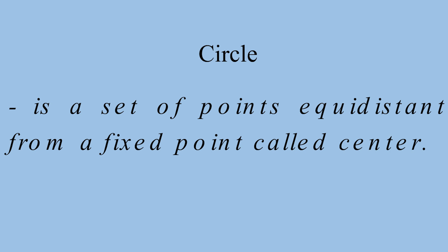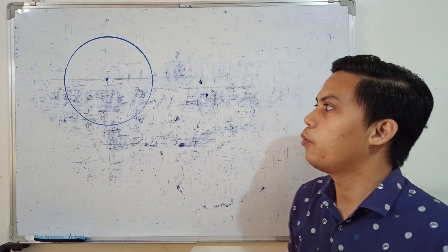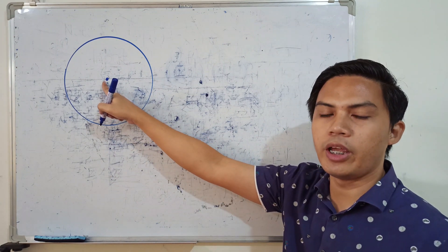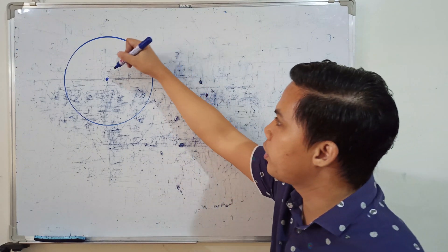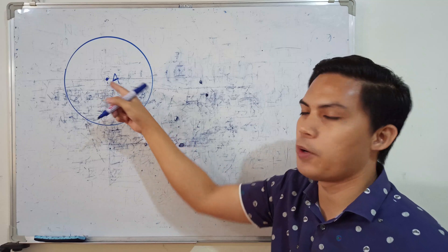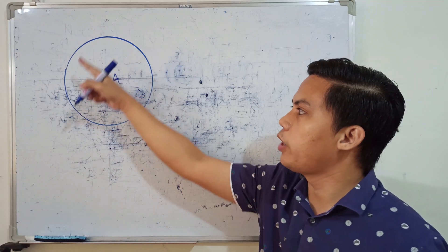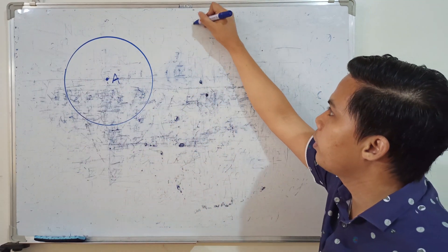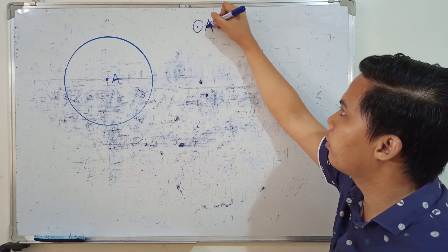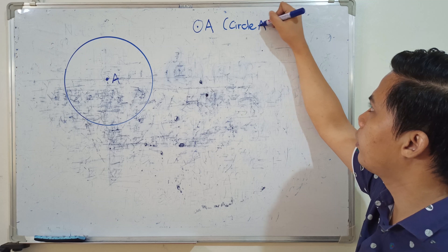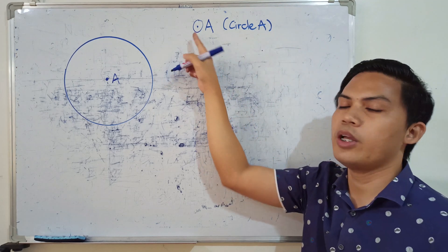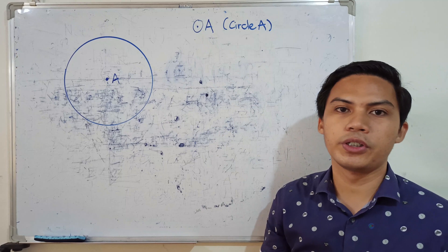By definition, a circle is a set of points equidistant from a fixed point called the center. Looking at the illustration, we have the center, and we can name it by any capital letter. Suppose this is point A — that means the name of our circle would be Circle A. That is the symbol for circle.